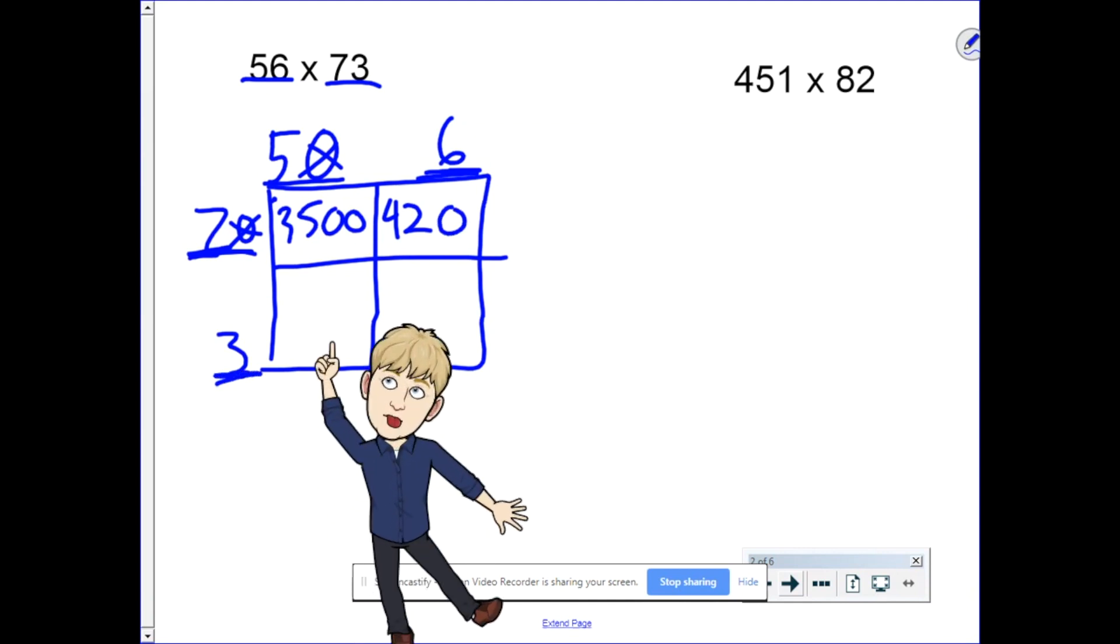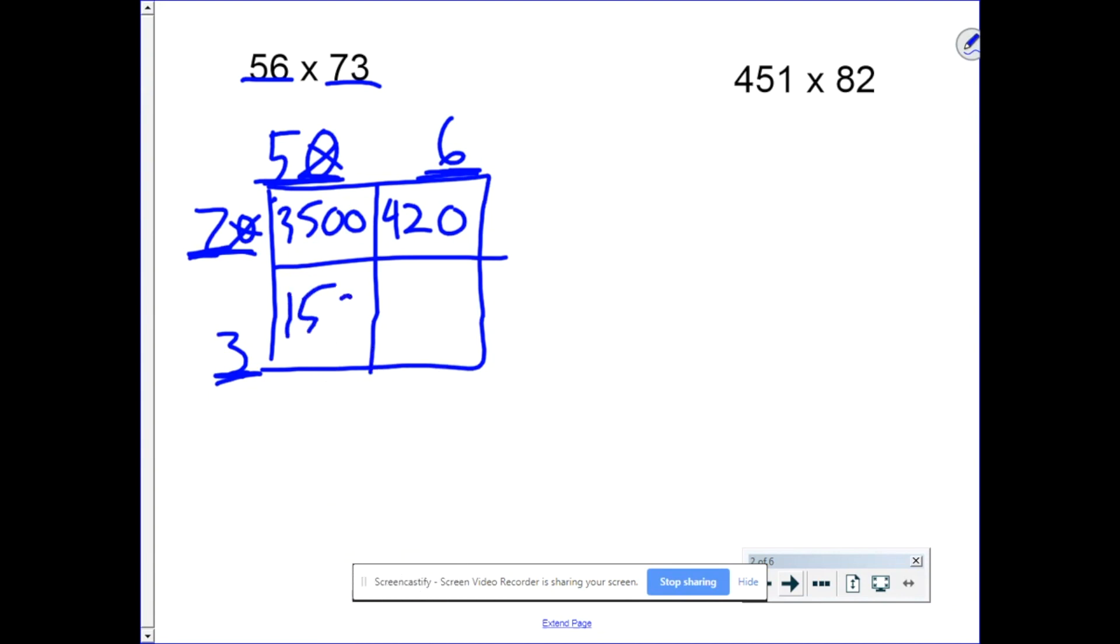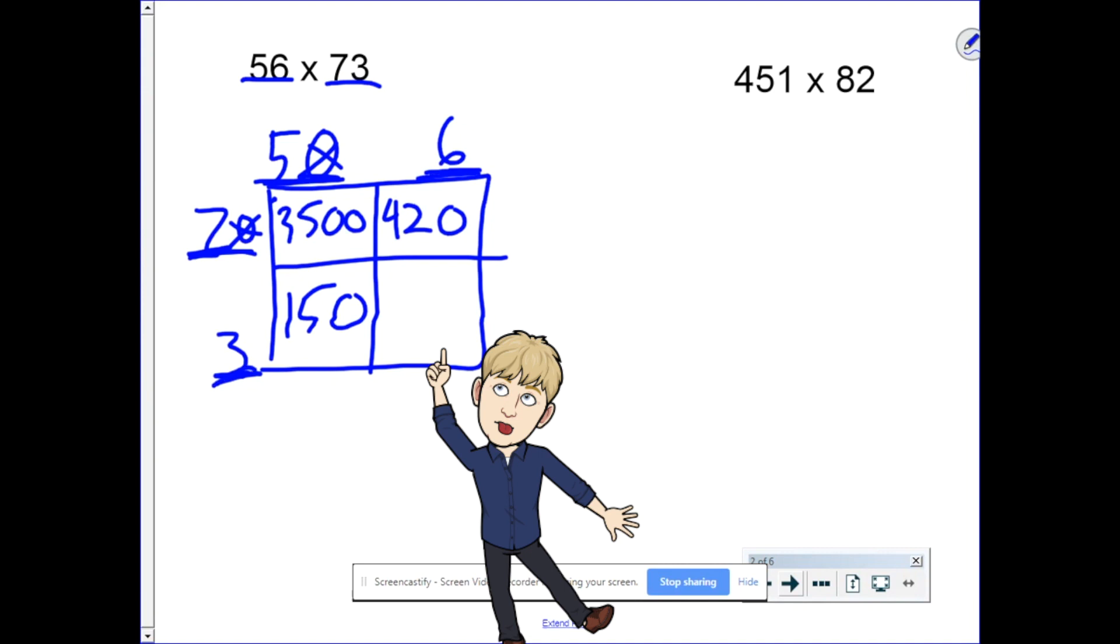Down below, we have 3 times 50. 3 times 5 is 15. Tack on the zero, that's 150. In the last box, we have 3 times 6, which is 18.